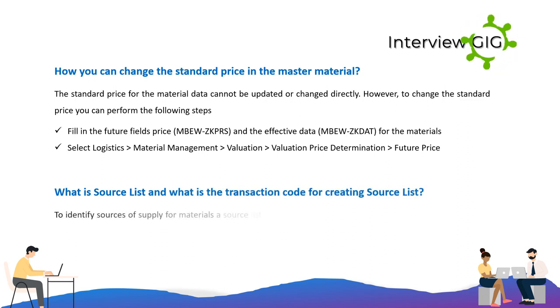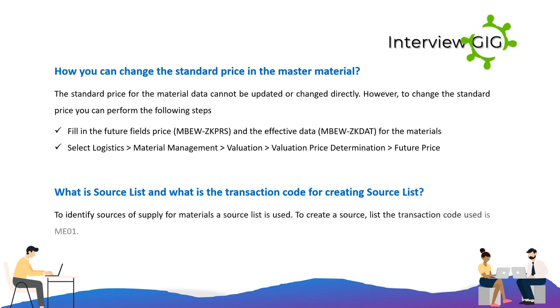What is a source list and what is the transaction code for creating a source list? To identify sources of supply for materials, a source list is used. To create the source list, the transaction code used is ME01.